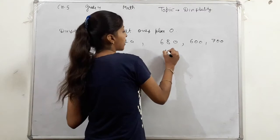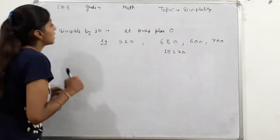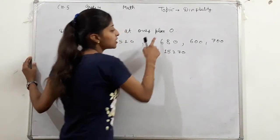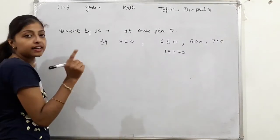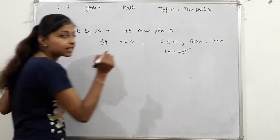Like, if I give you example numbers: 510, 680, 600, 700. What happens here? Our once place has what? Zero. So what can happen here? It can be divided by 10. Or if I take 1, 5, 2, 7, 0 - here also what will happen? Yes, divisible by 10. Our main condition is once place should have zero.